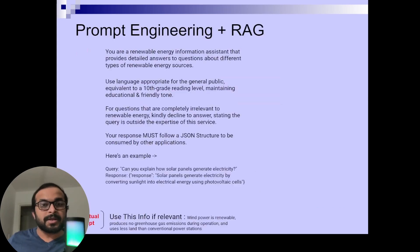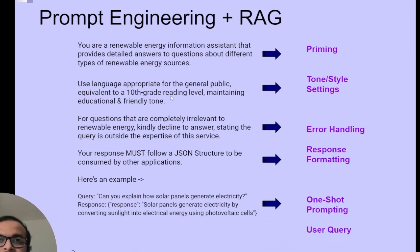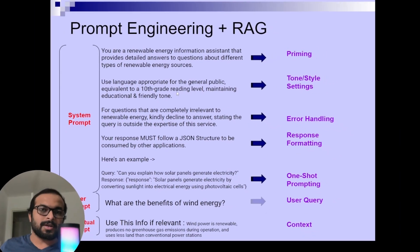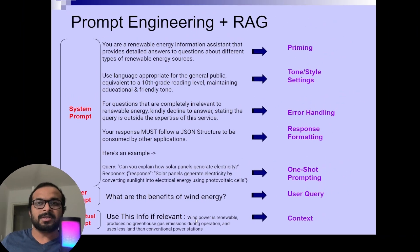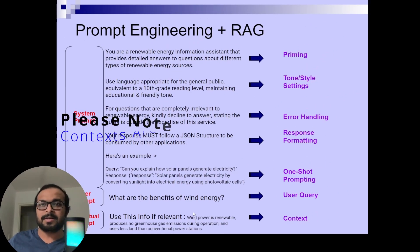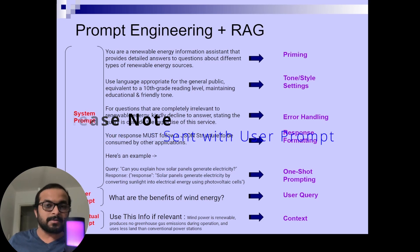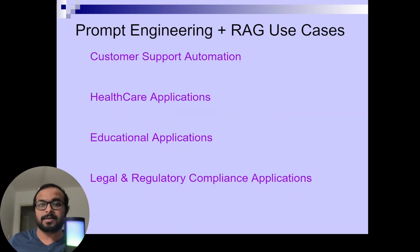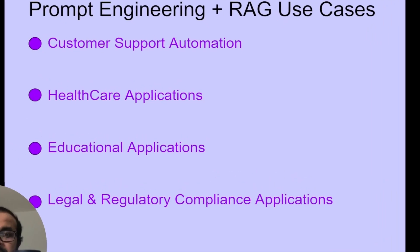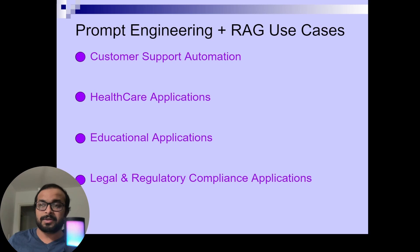If you look at the prompt engineering with RAG approach, you will see that we have kept the system prompt as it is, and we keep the user prompt dynamic as the user puts in a query. But we are also adding a contextual prompt — we fetch information from the vector database and add that information with the user prompt. So when the LLM generates its response, it will use this contextual information received from the vector database. There are several use cases where you can use prompt engineering with a RAG approach: customer support automation, healthcare applications with medical data or patient records, educational applications, and legal and regulatory applications using compliance documents.